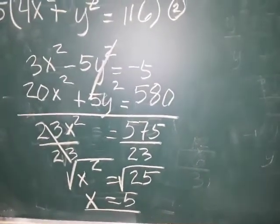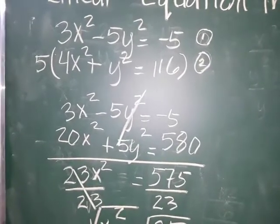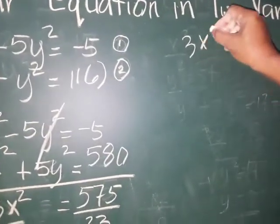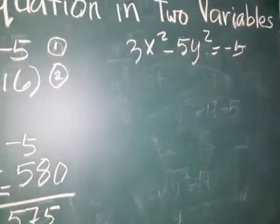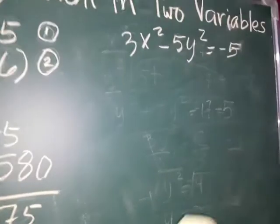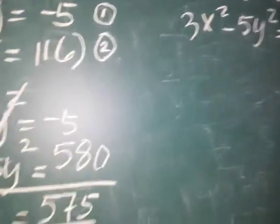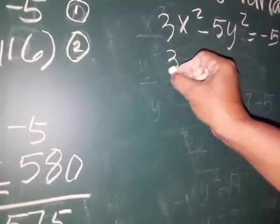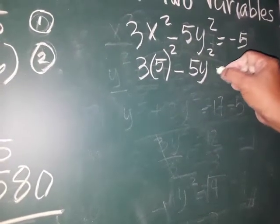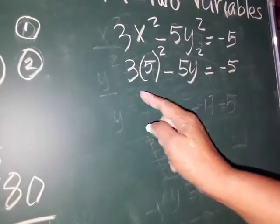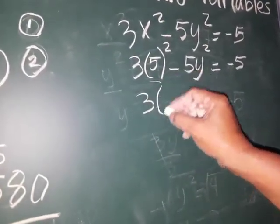Since we have x, now we're going to get the value of y using any of the equations. Let's use equation 1: 3x squared minus 5y squared is equal to negative 5. Substitute x equals 5: replace x with 5. So we have 3 times 5 squared minus 5y squared is equal to negative 5. Following PEMDAS, do the exponent first: 5 squared is 25.